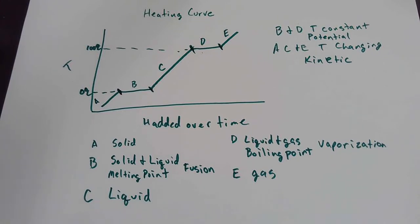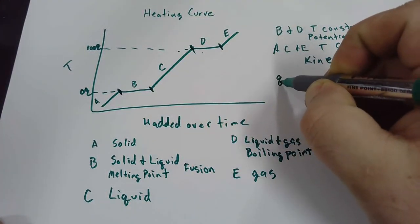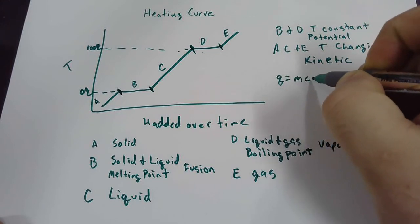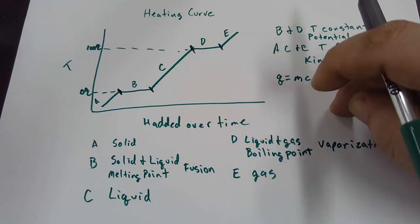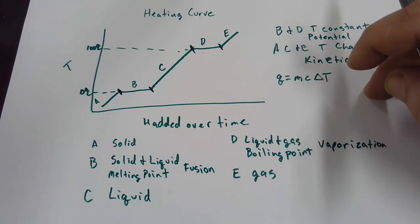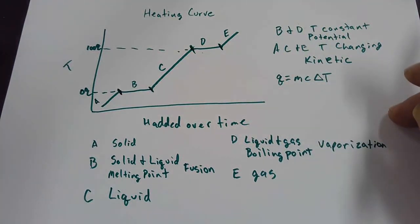You're absolutely right. Sarah is absolutely right. We cannot use them because one of the equations we use is called q equals m c delta t. Delta t means change in temperature. Which segments do you think I'm going to use that I can measure a change in temperature for? So A, C, and E are going to be using q equals m c delta t.